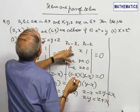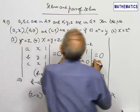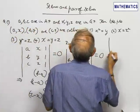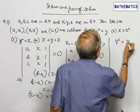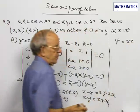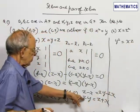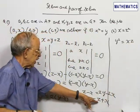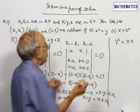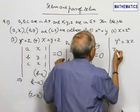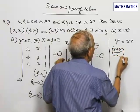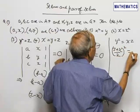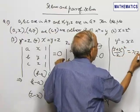That means Y squared is equal to XZ, the GP condition. Substitute for Y from here as (Z plus X) by 2. So (Z plus X by 2) whole squared is equal to XZ.